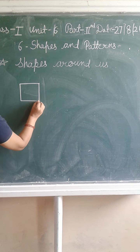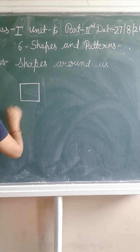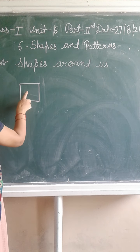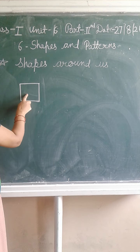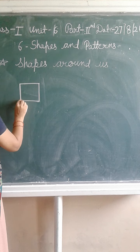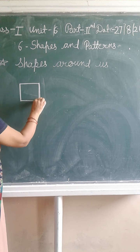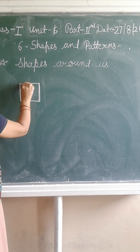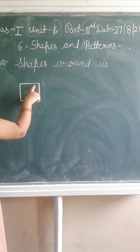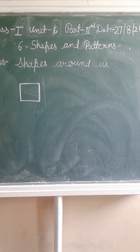This shape is Square. Square has 4 sides — count: 1, 2, 3, 4.